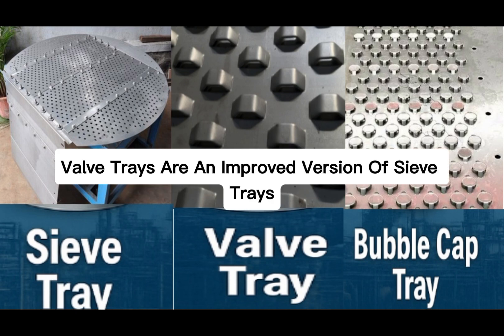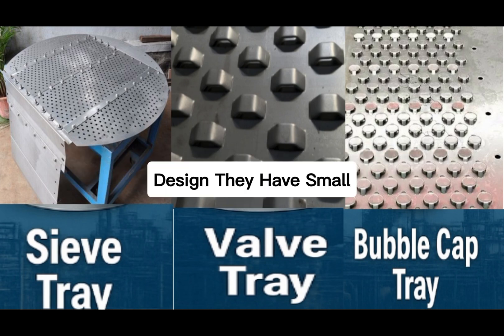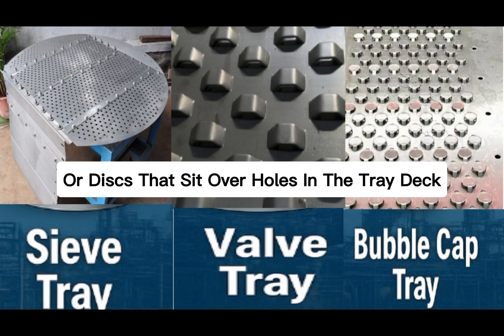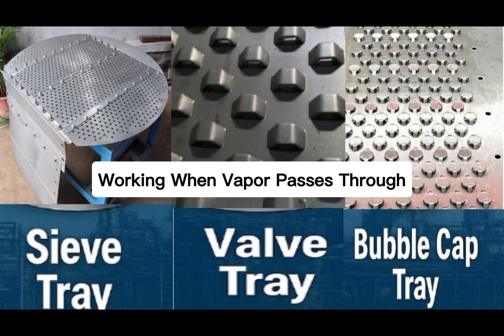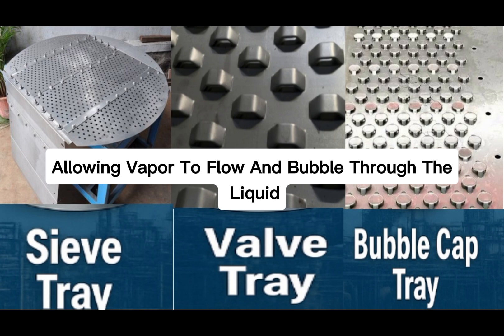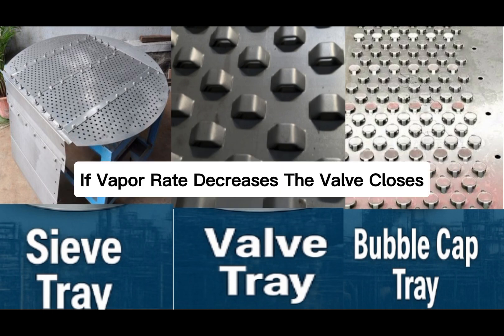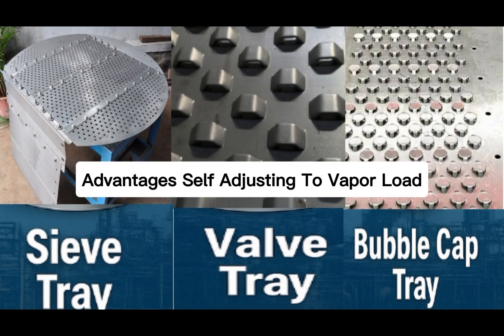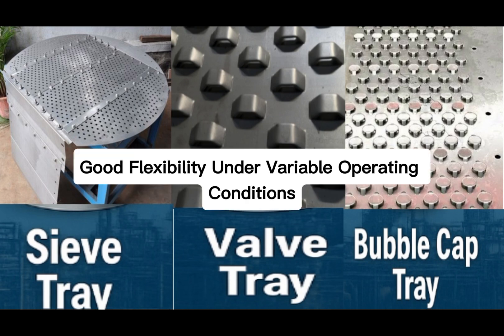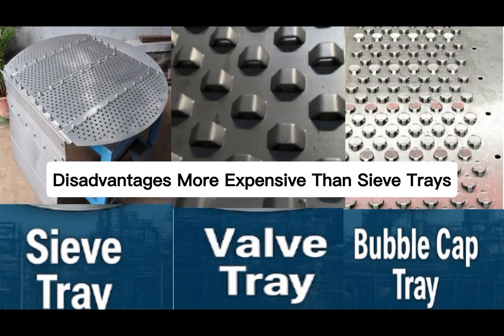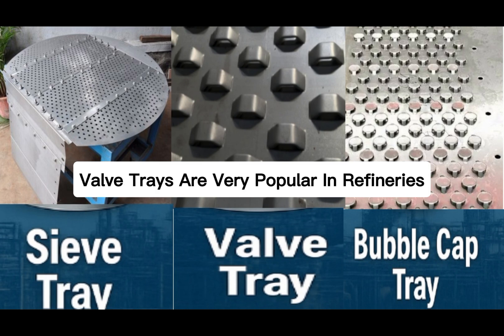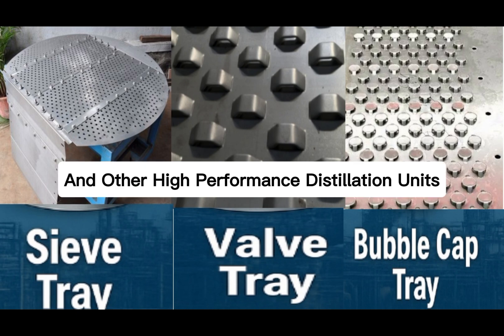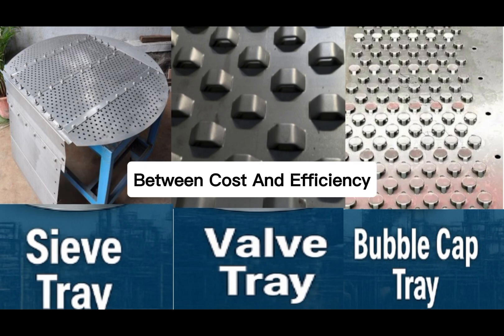Valve trays are an improved version of sieve trays. They have small liftable valves or discs that sit over holes in the tray deck. These valves open automatically when vapor flows upward. When vapor passes through, it lifts the valve slightly, allowing vapor to flow and bubble through the liquid. If vapor rate decreases, the valve closes partially, preventing liquid leakage. Advantages: self-adjusting to vapor load, reduced weeping, better efficiency, and good flexibility under variable operating conditions. Disadvantages: more expensive than sieve trays, and mechanical parts can wear out over time. Valve trays are very popular in refineries, petrochemical plants, and other high-performance distillation units because they offer a good balance between cost and efficiency.